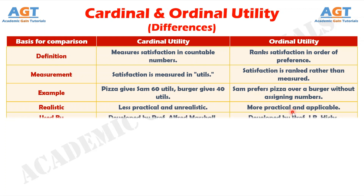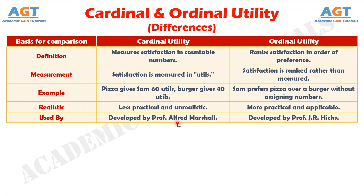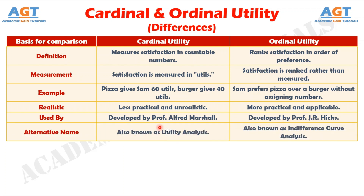Number 5: cardinal utility was introduced by Professor Alfred Marshall, whereas ordinal utility was developed by Professor J.R. Hicks. Number 6: cardinal utility is also known as utility analysis, whereas ordinal utility is referred to as indifference curve analysis.